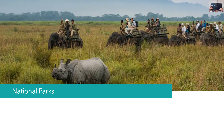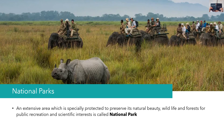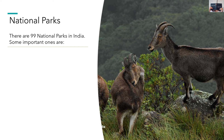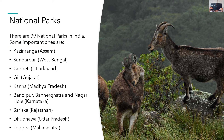National Parks: National parks are areas that aim to protect the natural environment and are involved in public recreation and enjoyment activities. A national park is an extensive area specially protected to preserve its natural beauty, wildlife, and forests for public recreation and scientific interest. Forestry, grazing, or agricultural activities are not allowed here. There are 99 national parks in India. Some important ones are Kaziranga, Sundarbans, Corbett, Gir, Kanha, Bandipur, Bannerghatta, Nagarhole, Sariska, Dudhwa, and Tadoba.